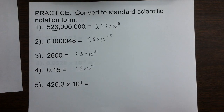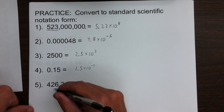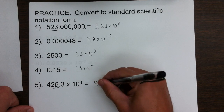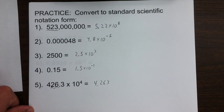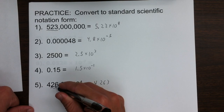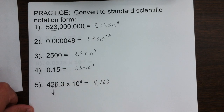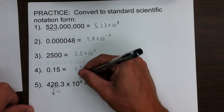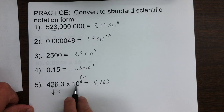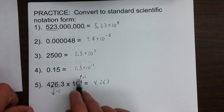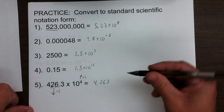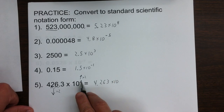Notice when we get to this one, it's already in some sort of scientific notation. However, it's not standard because the coefficient is not between 1 and 10. So we have to move the decimal place over 2 places, giving a coefficient of 4.263. But we can't just leave it at that because we changed this number. So in order to make these equal, we have to adjust the exponent as well. We moved the decimal 2 places, essentially making the coefficient smaller by 2 powers of 10, so we have to increase the exponent by 2 powers of 10. Whatever we do to the coefficient, we do the opposite to the exponent.